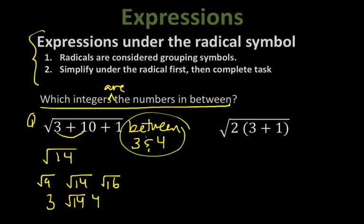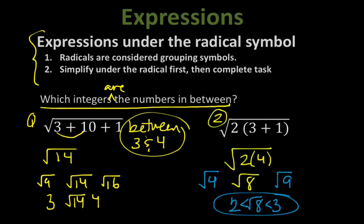Try the second one on your own. On number 2, we added inside the parentheses first — remember, if you're inside a grouping symbol with more grouping symbols, work your way to the middle. You should have gotten square root of 8. Square root of 8 is between square root of 4 and square root of 9, so: 2 is less than square root of 8 is less than 3.